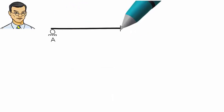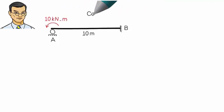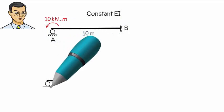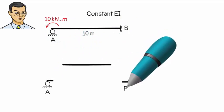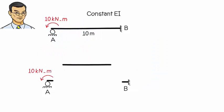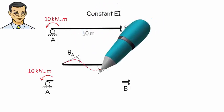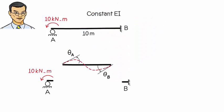Consider the following indeterminate beam. It is subjected to a concentrated moment at the left end. We start by isolating the joints of the structure. Here, we have two joints and one beam segment. So, we denote the joint rotations as theta A and theta B, and refer to the end moments as MAB and MBA. The slope deflection equations for segment AB can be written as shown.